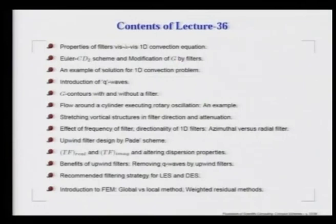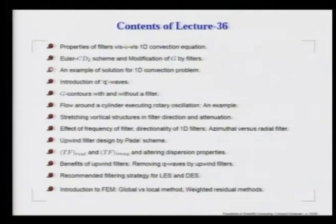Lecture 36 continues our discussion on properties of filters with the help of the 1D convection equation. We pick up a basically unstable Euler CD2 scheme and design a transfer function to modify the numerical amplification factor g, solving this problem in a perfectly neutrally stable manner.